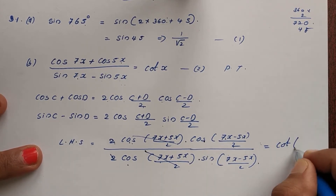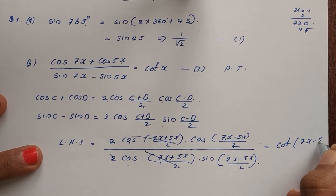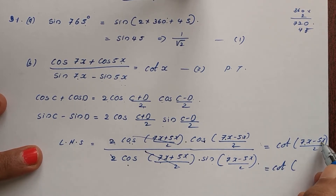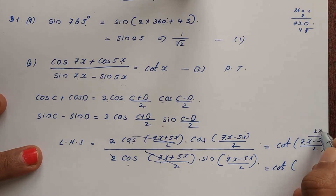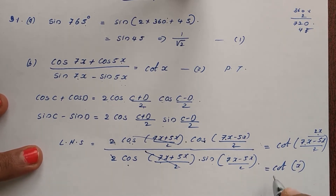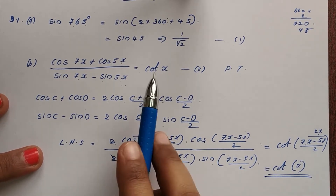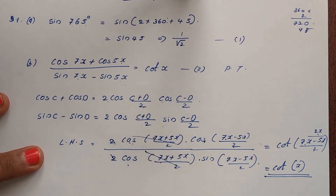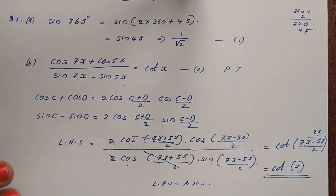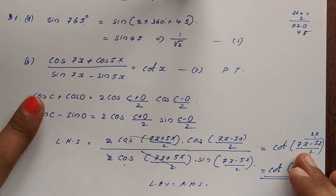What is cos divided by sin? That is cot. So we get cot((7x-5x)/2), which equals cot(2x/2), that is cot x. Hence it is proved that LHS equals RHS. We needed to apply the CD formula.